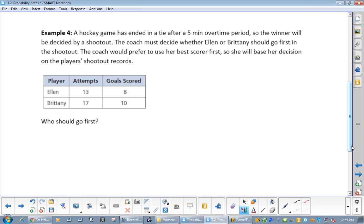What would you just do? Yeah, like, Ellen, go 8 out of 13, and that's 0.615. Brittany would be 10 out of 17, 0.588, and I would say Ellen should shoot first, right? So, there won't be, this one is pretty easy.